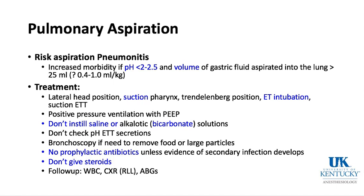No prophylactic antibiotics unless evidence of secondary infection develops, and do not give steroids — they're not useful. Follow the patient with white blood cell counts, chest x-rays — often the right lower lobe shows signs of aspiration first — and arterial blood gases. So volume and pH are the important factors with pulmonary aspiration.